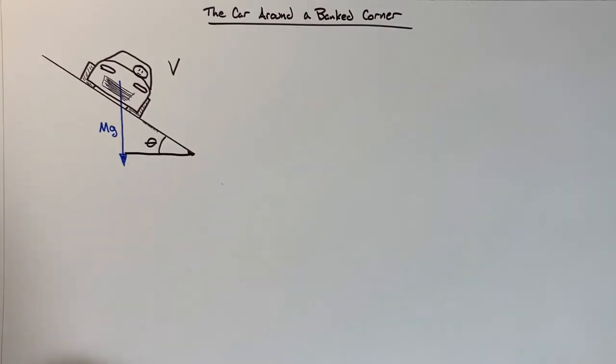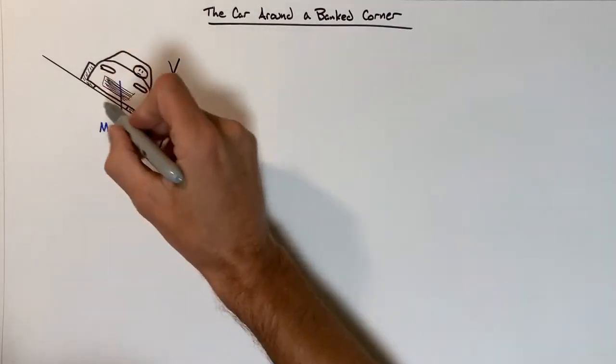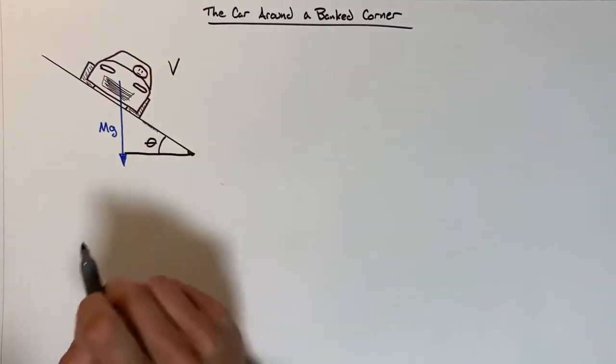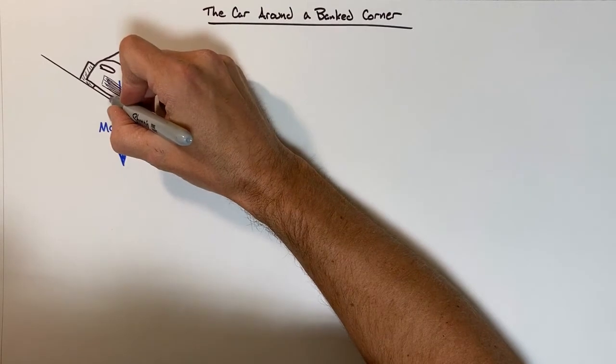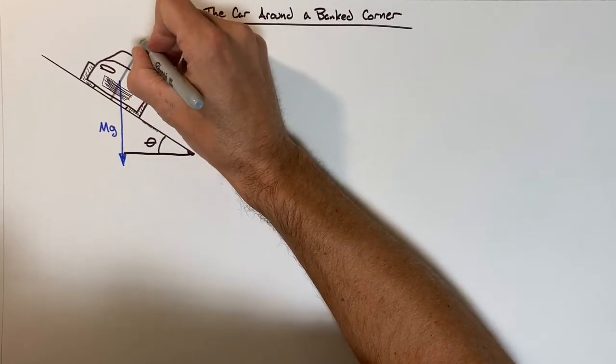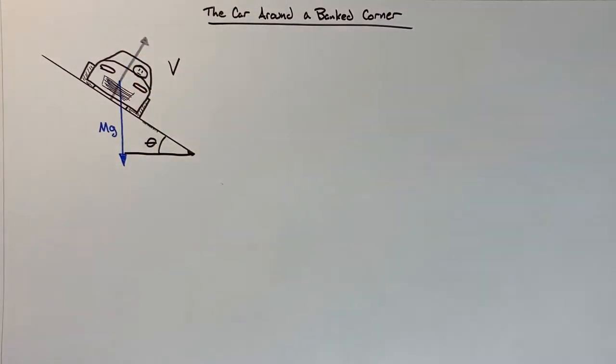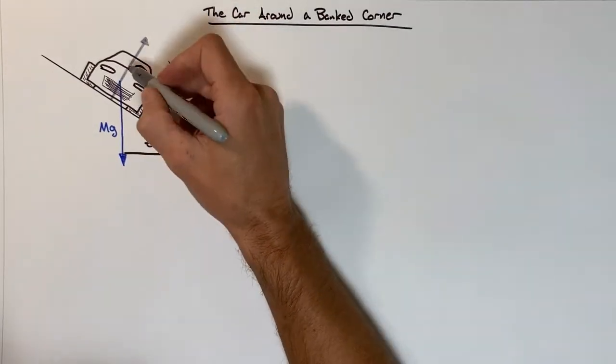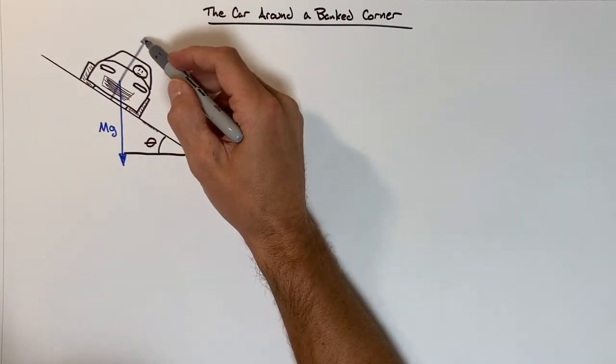This is where people mess up. They go through and they say that this block is just like a block sitting on a hill. They say Fn is upward this way. But what they do is they say Fn is mg cosine theta, just like a block on a hill.